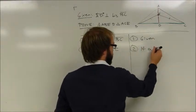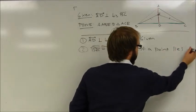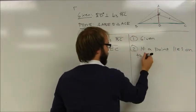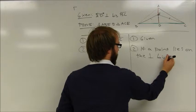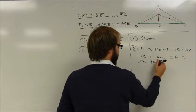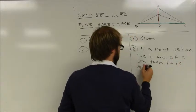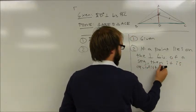So if a point lies on the perpendicular bisector of a segment, then it is equidistant from the endpoints of that segment.